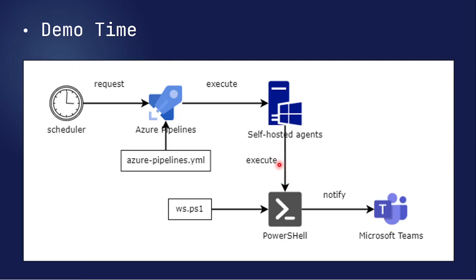The solution will be like this: we create an Azure Pipeline using a YAML file — I call it the Azure Pipeline YAML file — which defines the pipeline workflow. I set up a schedule, for example at midnight, so the pipeline will be executed on the self-hosted agent to run a PowerShell script. I create one PowerShell file that updates everything, and after the update finishes, it sends a notification to the Teams channel we provide.